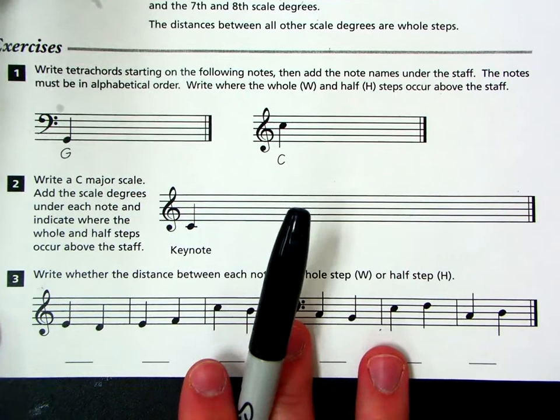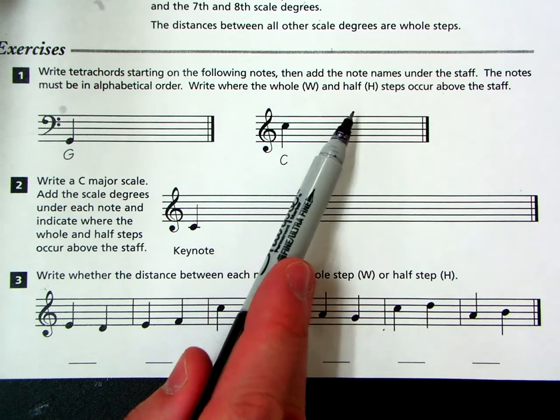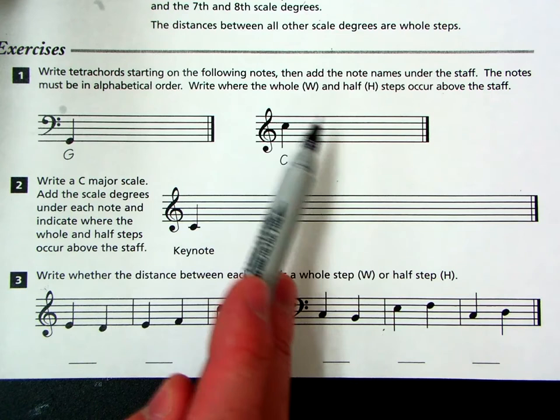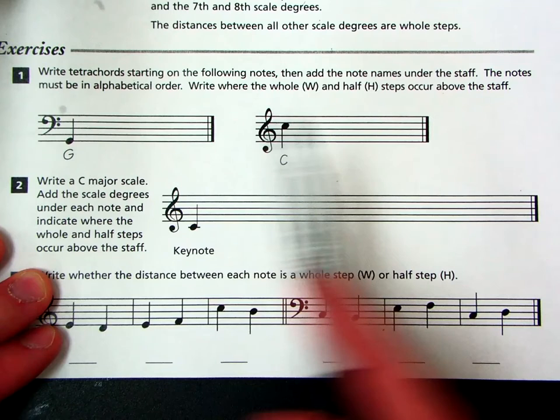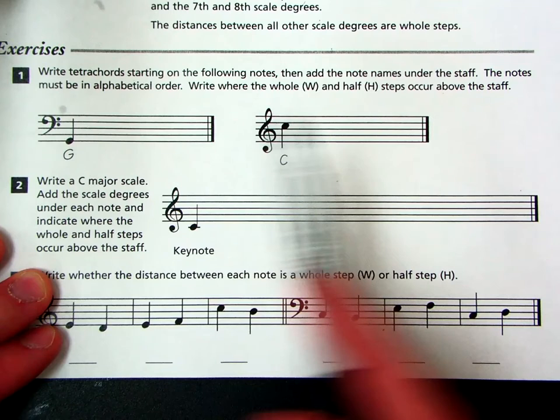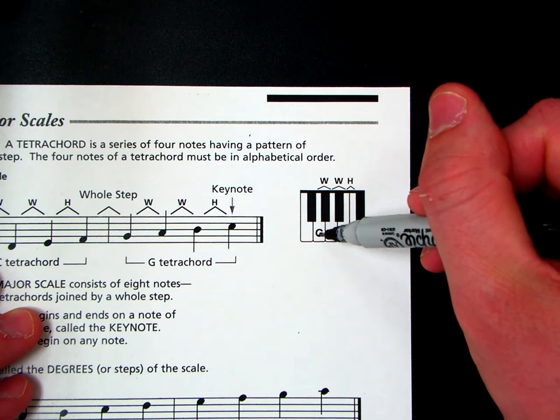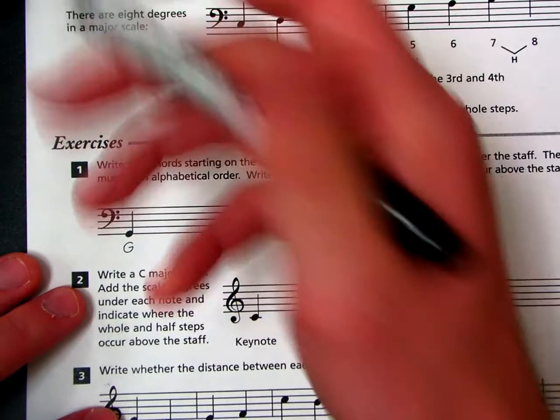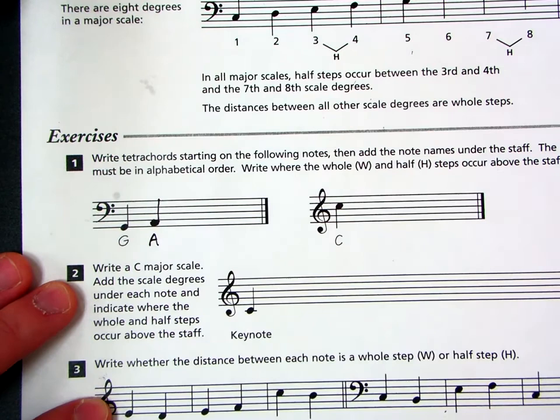So, pause your video real quick, complete these exercises, and then we'll come back and do it again. Alright, question one. Write tetrachord starting on the following notes. Then add the note names under the staff. The notes must be placed in alphabetical order. So it gave us our key note for both of these. The bass clef we have a G, and over here for the treble clef we have C. So, from G we need to move a whole step away. If we look at our keyboard, a whole step away would be two keys. So G, one, two, we move to A. So A is the next note in this scale.